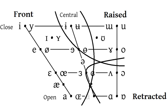The first formant, abbreviated F1, corresponds to vowel openness. Open vowels have high F1 frequencies, while close vowels have low F1 frequencies, as can be seen in the accompanying spectrogram. The i and u have similar low first formants, whereas a has a higher formant.